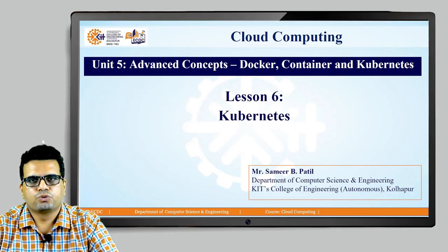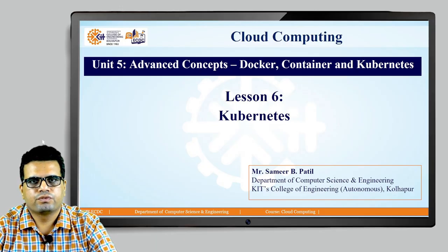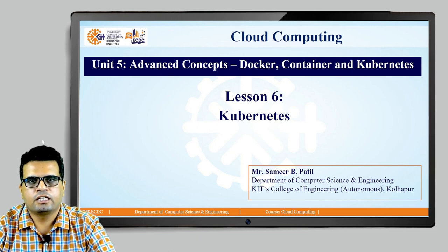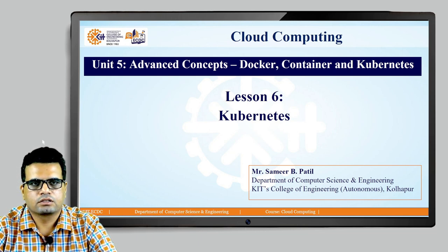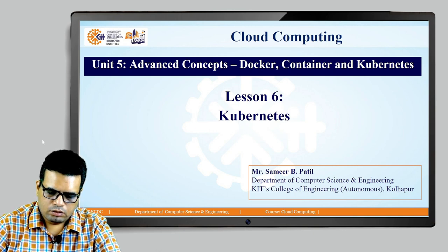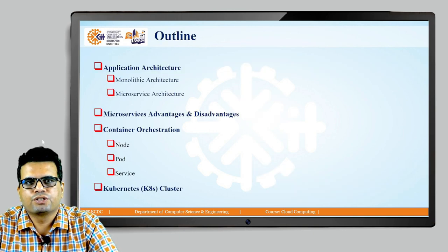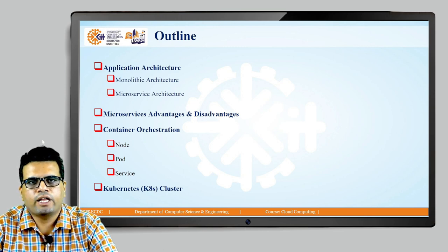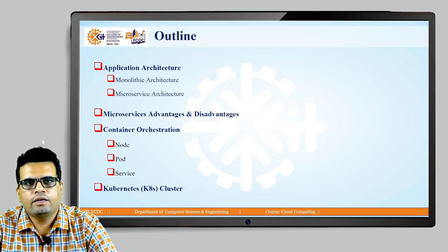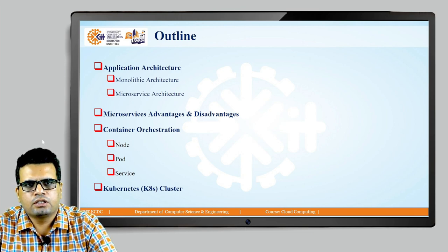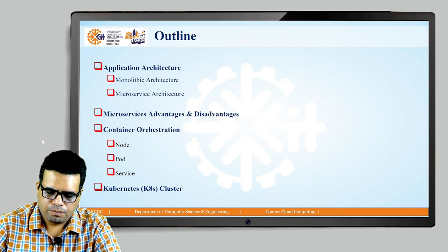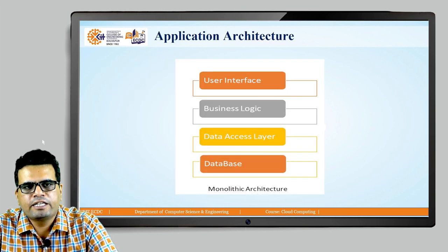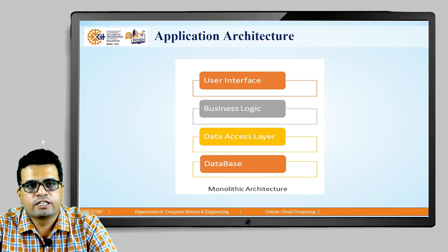Hello everyone, welcome to the session on cloud computing, unit number 5, advanced concepts: Docker containers and Kubernetes, lesson number 6, Kubernetes outline. For this session we will be talking about application architectures — monolithic and microservice — focusing on microservice advantages and disadvantages, container orchestration, and Kubernetes application architecture.